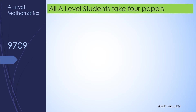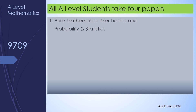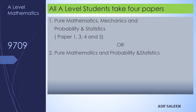For A-Level students, you have to take four papers. Cambridge has decided on two different combinations. The first is Pure, Mechanics, and Probability and Statistics: Papers 1, 3, 4, and 5. The second option — if you are not comfortable with Mechanics — is Papers 1, 3, 5, and 6.